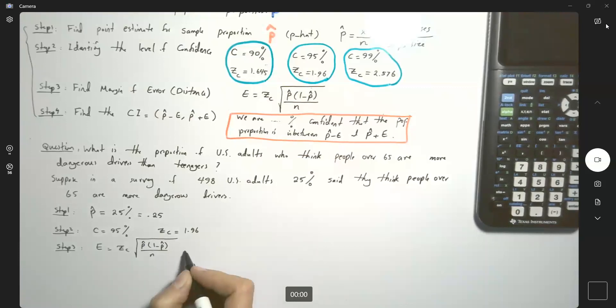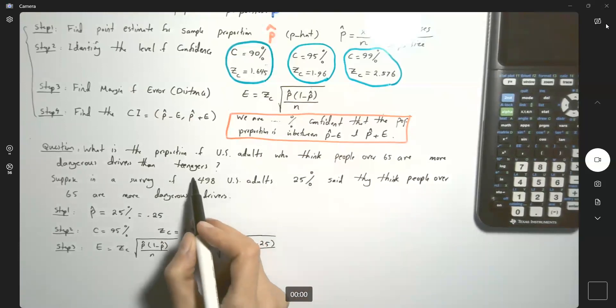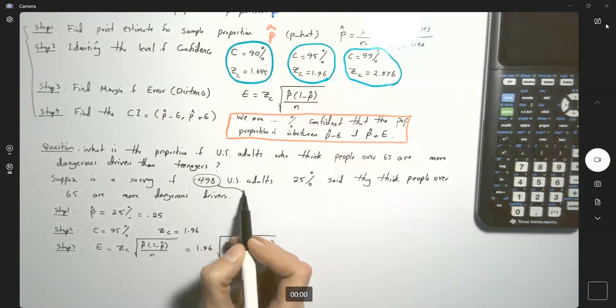It means that I have to multiply 1.96 by the radical of P hat, which is 0.25, times 1 minus 0.25 divided by N. N is equal to 498. This is my sample size.